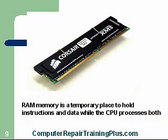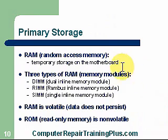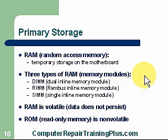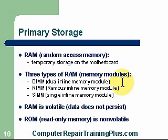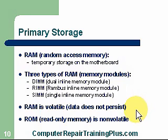Here's a picture of a Corsair RAM module. RAM is temporary holding — these have a slot for connecting to the motherboard and just push straight down. Random access memory is temporary. Three types: DIMMs, RIMMs, and SIMMs. DIMMs are pretty much all we see today — dual inline memory modules: DDR1, DDR2, and now DDR3 — getting faster because CPUs demand faster memory. RAM is volatile, meaning when the power is turned off, that memory goes away. We need a hard drive or storage device for permanent memory.